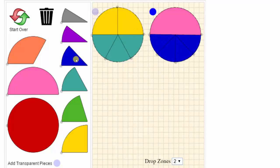We can also add transparent fraction pieces over existing fraction pieces or within a drop zone by clicking add transparent pieces.